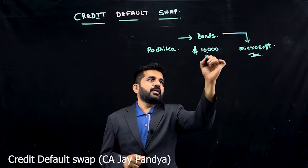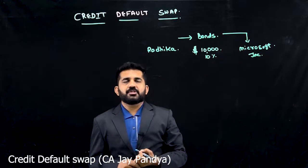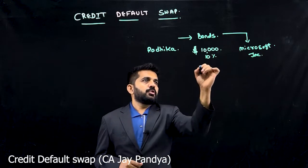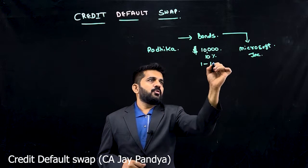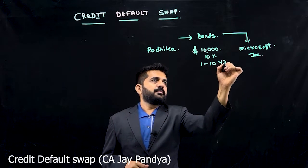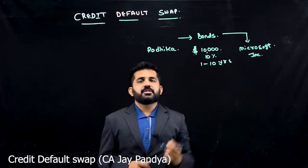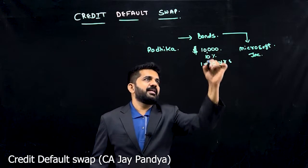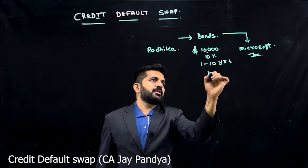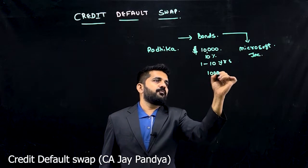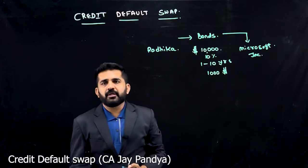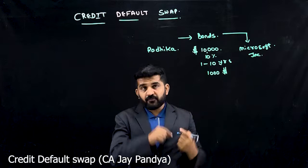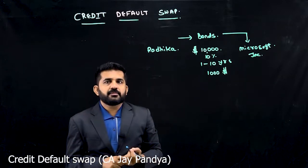The bond carries a coupon of 10% and will be for 10 years. So she will be getting a regular interest of $1,000 per annum for the period of 10 years.